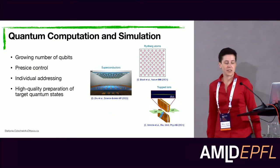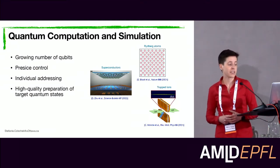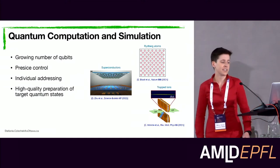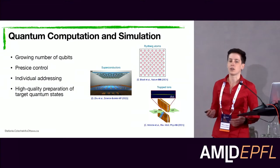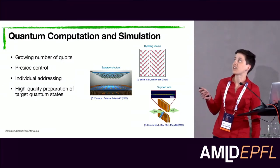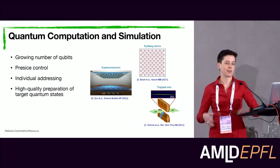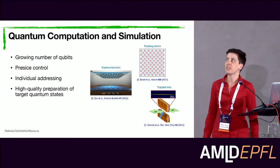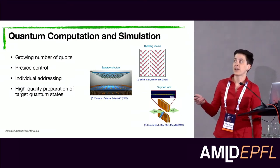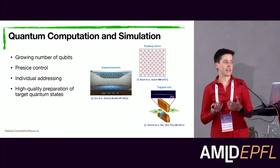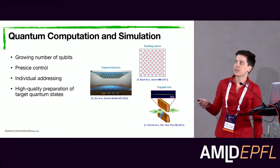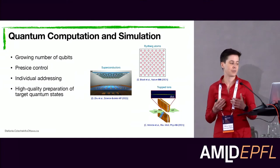Let me first start by motivating the field of quantum state reconstruction. If we look at developments in quantum computation and quantum simulation in recent years, especially on the experimental side, we see a lot of activity. Different experimental devices can realize qubit systems — superconductors, Rydberg atom arrays, trapped ion systems, and more. What they all have in common is that the number of realizable qubits has been growing, and the precision of control and individual addressing has been improving rapidly. We are currently at a state where we can prepare quantum states with experimental devices at pretty high quality.